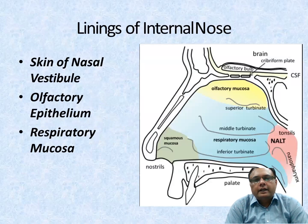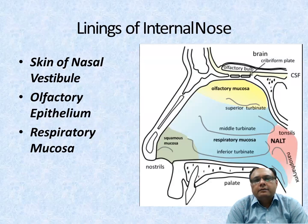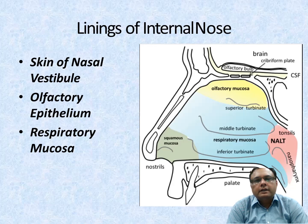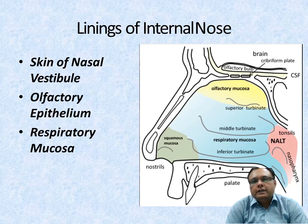The lining of the internal nose: it is lined by the skin at the nasal vestibule, olfactory epithelium, and the respiratory mucosa. Respiratory mucosa means the Pseudo-Stratified Ciliated Columnar Epithelium. There are three types of lining of the internal nose — skin, olfactory epithelium, and respiratory mucosa. This is the squamous mucosa at the vestibule, this is the olfactory mucosa, and this is the respiratory mucosa covering the superior turbinate, middle turbinate, and superior turbinate. The nasopharyngeal area is also covered with the same epithelium.